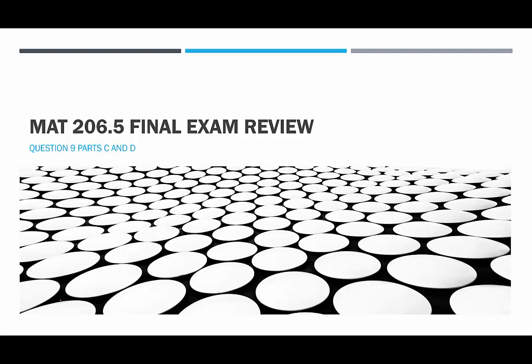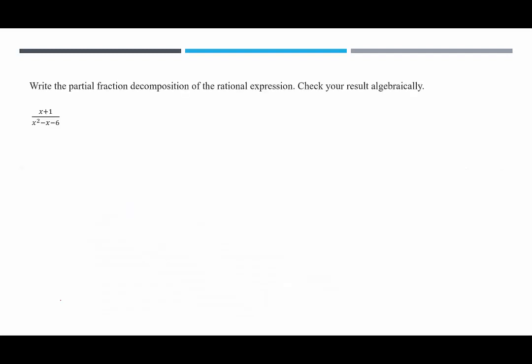Hello and welcome to HelpYourMath.com. We're back with Question 9, Parts C and D on the Math 206.5 Final Exam Review. Question C wants us to write the partial fraction decomposition of the rational expression x plus 1 over x squared minus x minus 6. What's the first thing we need to do? You guessed it, factor the denominator.